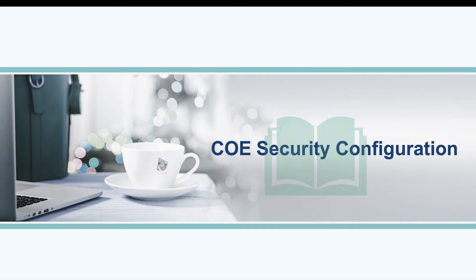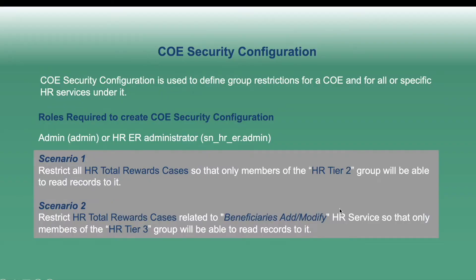Let's first understand the concept of COE security configuration in HRST. COE security configuration is used to define group restrictions for a COE and for all or a specific HR services under it. In the past, any user who had the case reader and case writer roles within HR were able to see any cases within COEs. Just to be noted here, we are not giving permission with this module. We are restricting permissions that people already have.